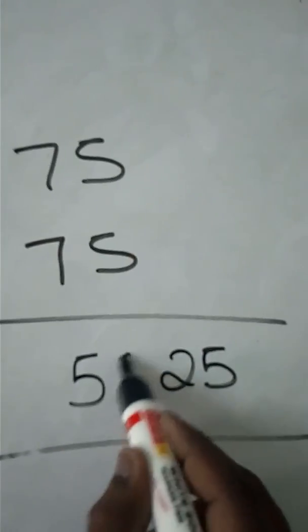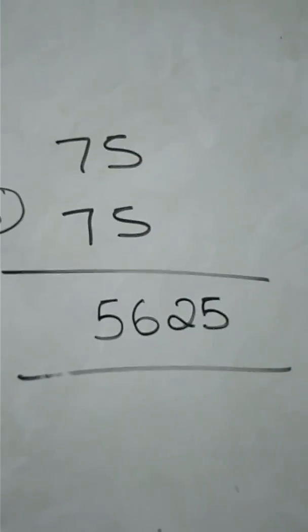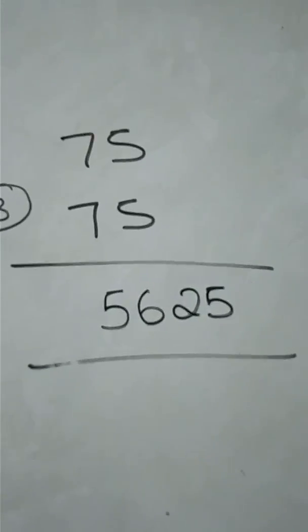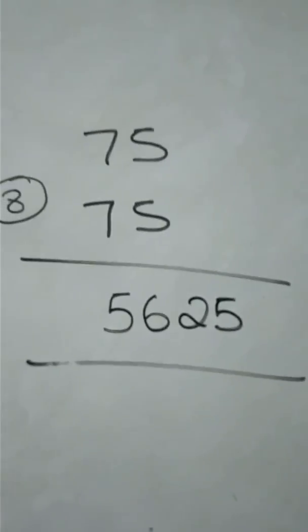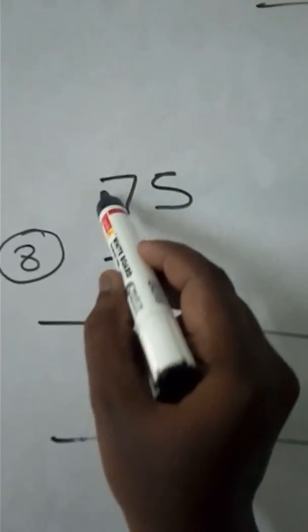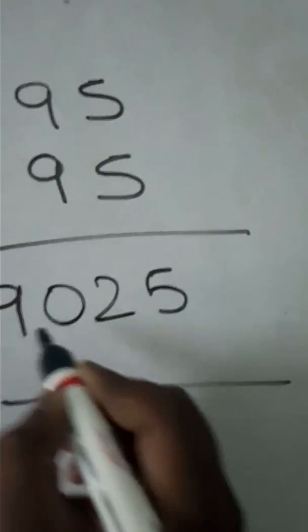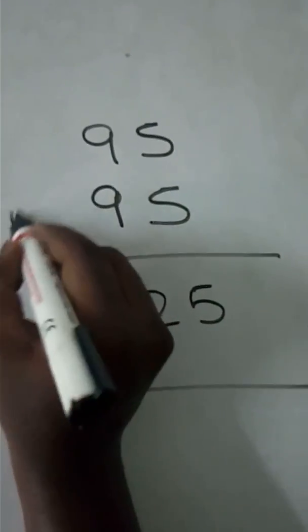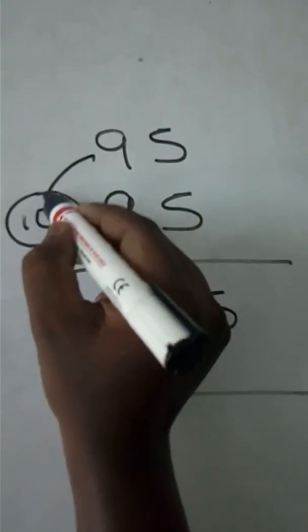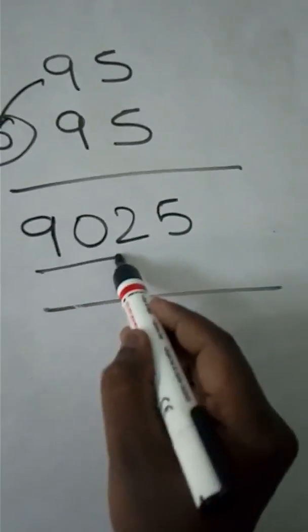56, 5625 is the answer. You can calculate within seconds, you have to imagine what is 7 into 8, that's it. Very easy. Then you can say 9025, not 1025, 9025, because 9 is replaced with 10. Multiply 9 with 10, this is 90.